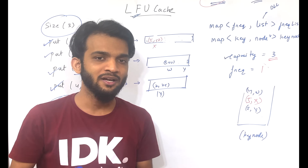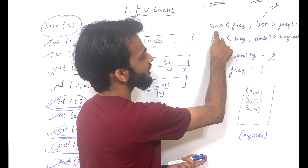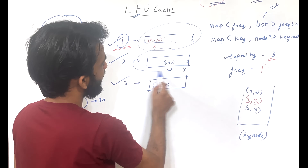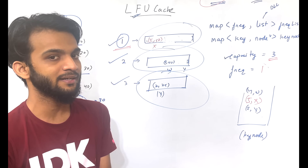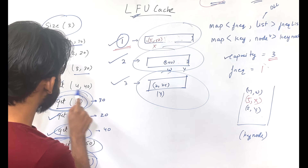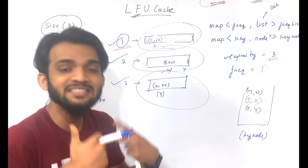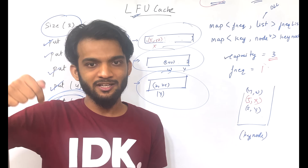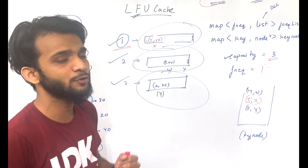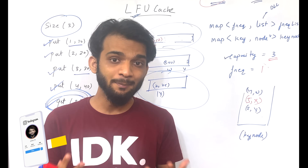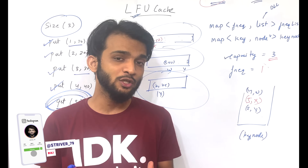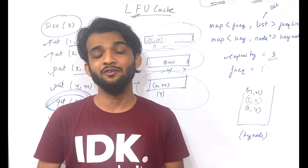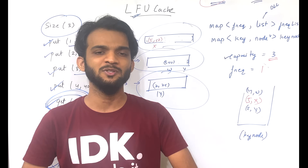To summarize the entire logic: I implemented a frequency-list map where for every frequency — 1, 2, 3 — there is an individual LRU doubly linked list. Every time an element is accessed, I take it out from the current frequency list, increment its frequency, and put it at the front of the next frequency list. That's how the entire LFU cache is implemented using the LRU cache concept. The code implementation for C++ and Java will be linked in the description. If you found this helpful please like and subscribe. Bye!